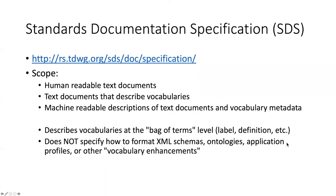The TDWG standards documentation specification is a standard which says how human-readable text documents should be formatted. It also describes how text documents that describe vocabularies should be formatted and how machine-readable descriptions of text documents and vocabulary metadata should be structured. It describes vocabularies at the bag of terms level, which includes labels and definitions, but does not specify more complex things like how XML schemas should be formed, or ontologies or application profiles.